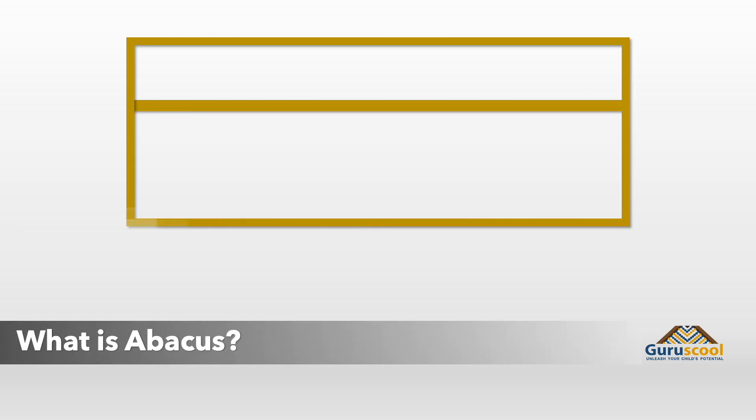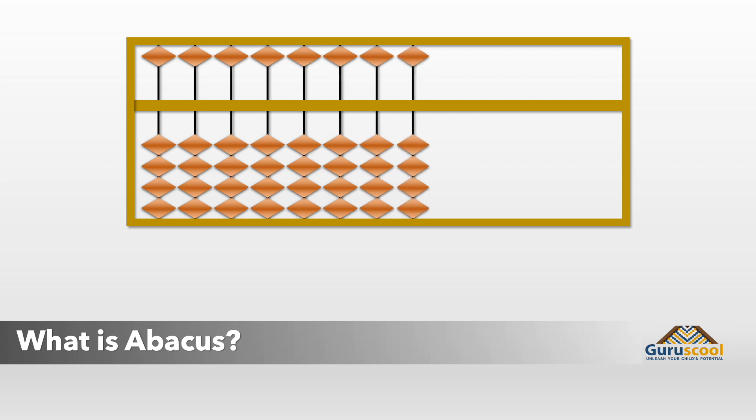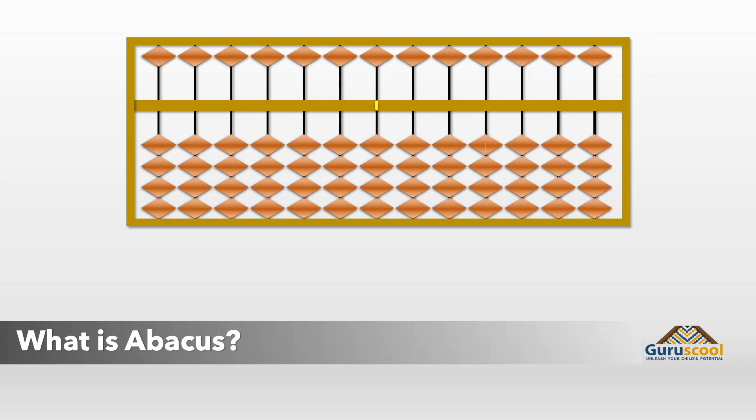The abacus is an ancient counting tool made using beads and rods to aid in fast calculations. It is still considered one of the fastest and most effective ways of doing error-free calculations.